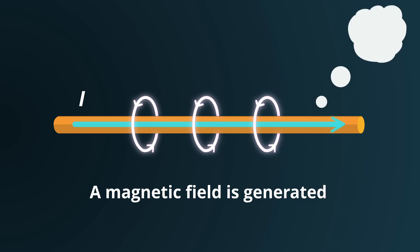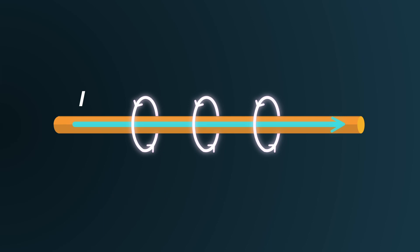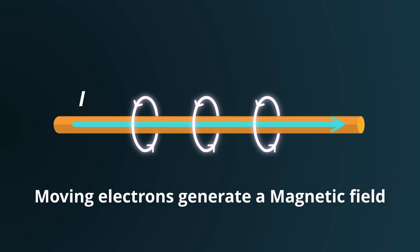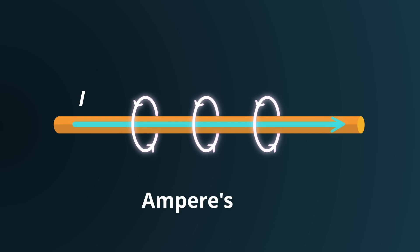Now you may ask, why? Why is a magnetic field produced? When electric current flows through a wire, it's essentially a movement of electrons. In the world of electromagnetism, moving electric charges, like our flowing electrons, give rise to a magnetic field around them. This phenomenon is governed by Ampere's law. It tells us that the movement of these charges in the wire creates a circular magnetic field that surrounds the wire.